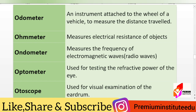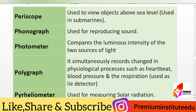Forty-ninth, optometer — used for testing the refractive power of the eye. Fiftieth, otoscope — used for visual examination of the eardrum. Fifty-first, periscope — used to view objects above sea level; used in submarines.